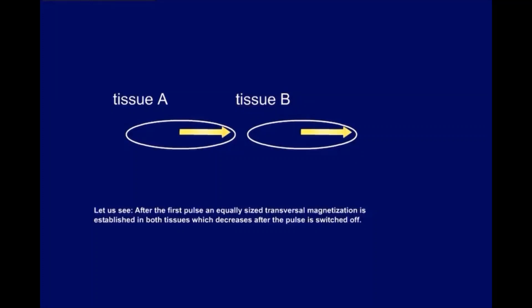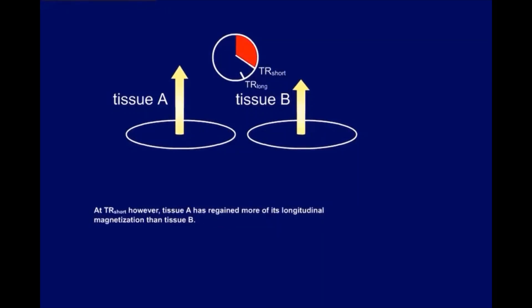After the first pulse, an equally sized transversal magnetization is established in both tissues, which decreases after the pulse is switched off. At TR short, however, tissue A has regained more of its longitudinal magnetization than tissue B.